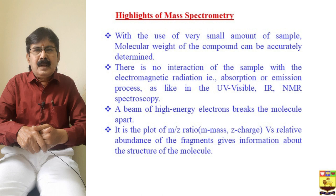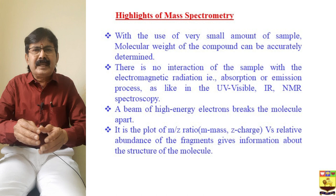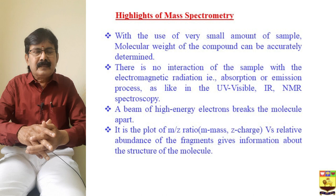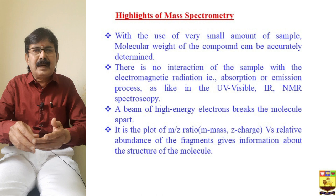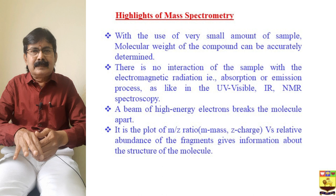The highlights of a mass spectrometer: for other instrumentation or other spectroscopy we need a large amount of sample in terms of milligrams, but here only a few micrograms is enough to record the spectrum. So with the use of a very small amount of sample, the molecular weight of the compound can be accurately determined. Unlike UV-visible, NMR, and IR, there is no interaction between electromagnetic radiation and the matter.